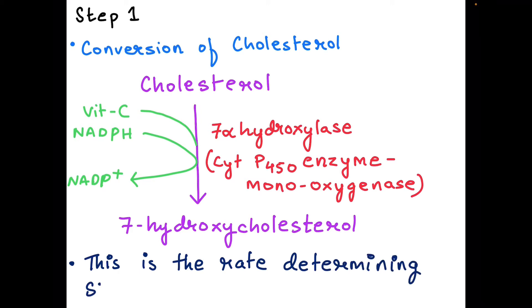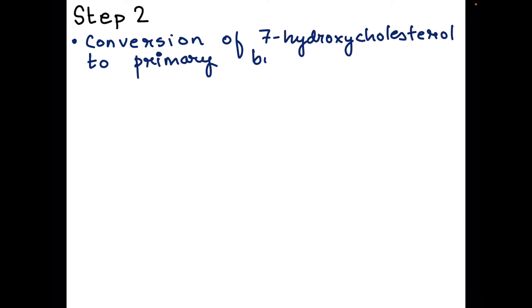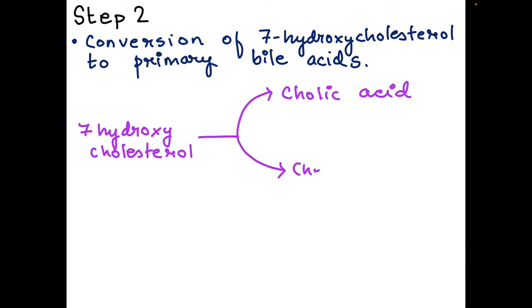Step two: In this step, the 7-hydroxycholesterol is converted to the primary bile acids. We'll see what they are in a moment. 7-hydroxycholesterol is converted to primary bile acids, which are cholic acid and chenodeoxycholic acid.